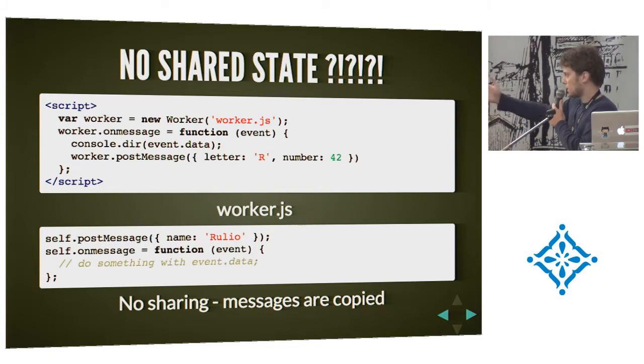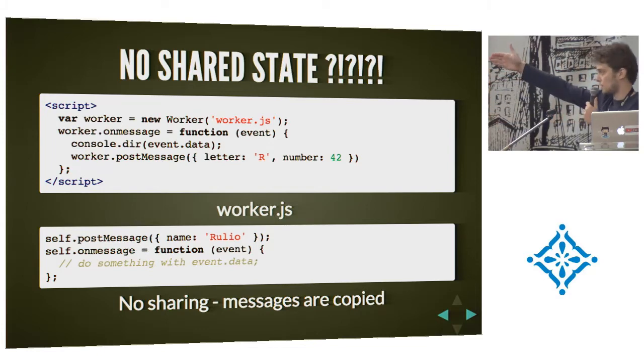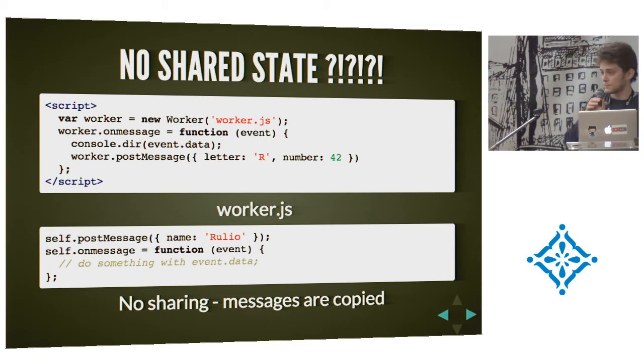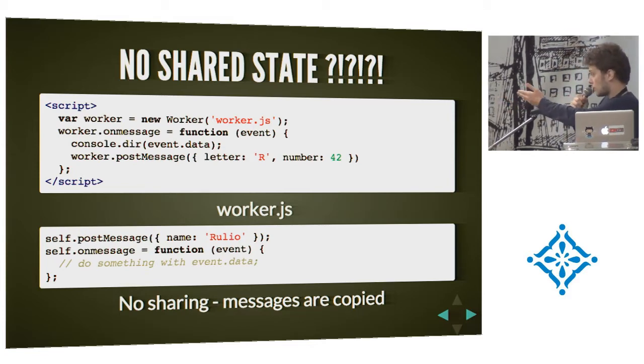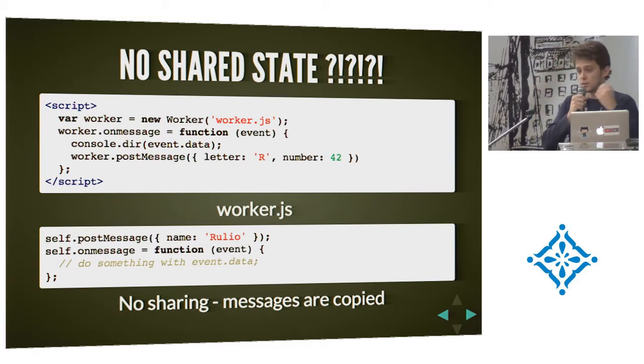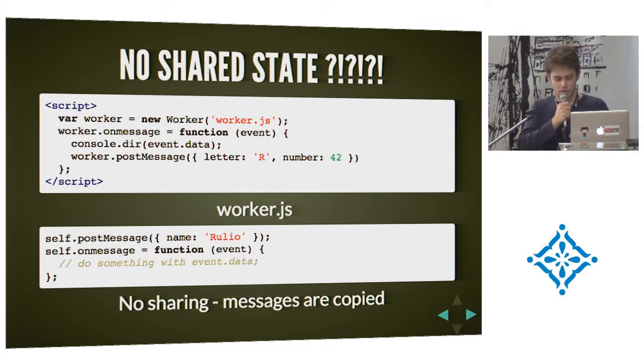Workers don't share state with the script that created them. This is how you'd use them: you create a web worker and register an onmessage handler on either side, and you exchange messages using postMessage. This may look like it's sharing an object from one side to the other, but actually the object is serialized and copied — so you really can't share any data.